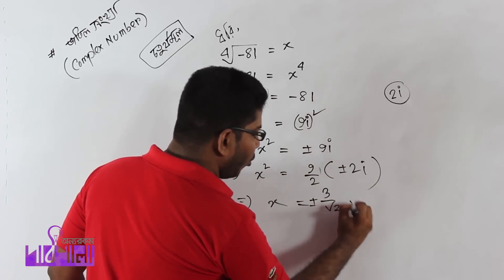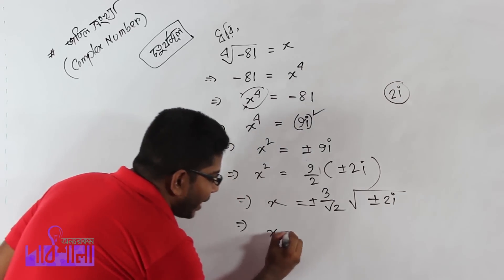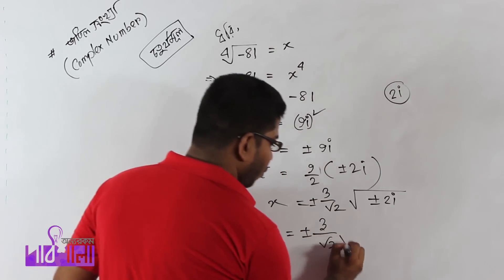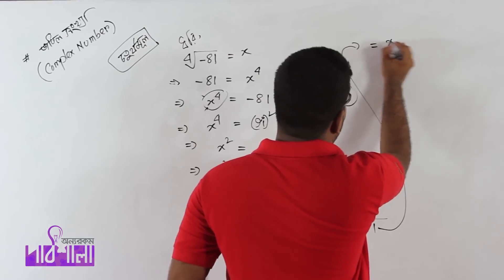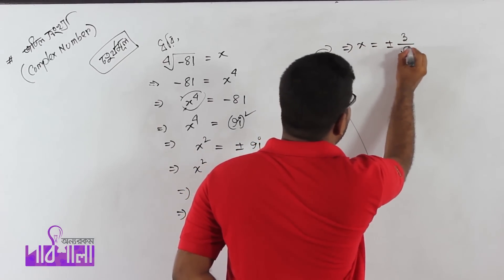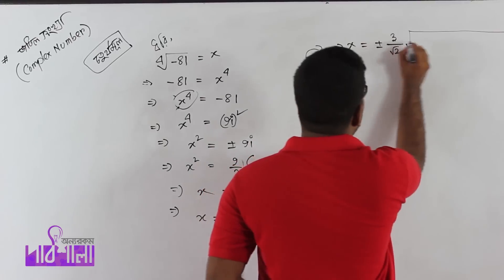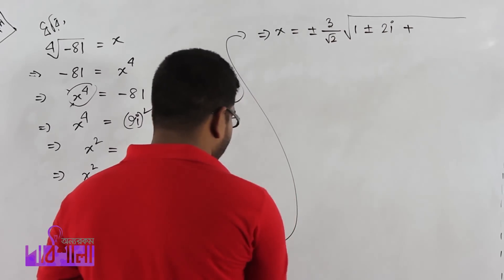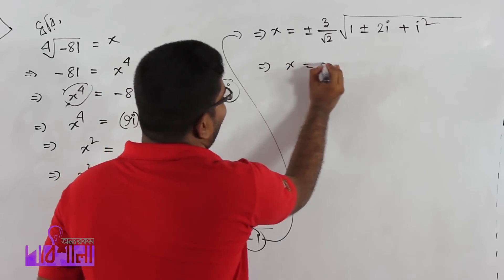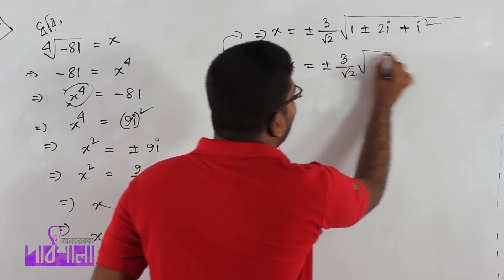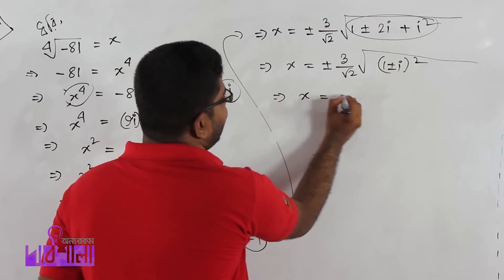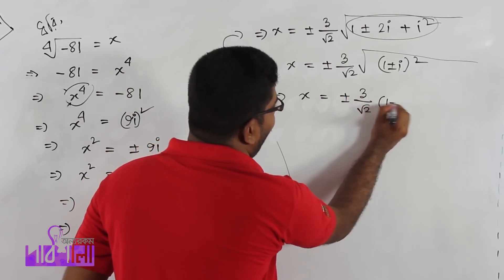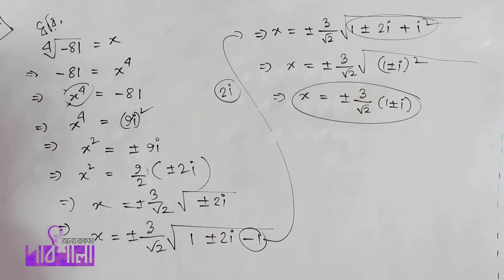x equal to plus minus three by root two, root over plus minus two i. Correct: x equal to plus minus three by root two, root over one plus minus two i. Last step: i square, so x equal to plus minus three by root two, root over one plus minus i whole square. Correctly: x equal to plus minus three by root two, one plus minus i. That is not the answer — that's all about the question.